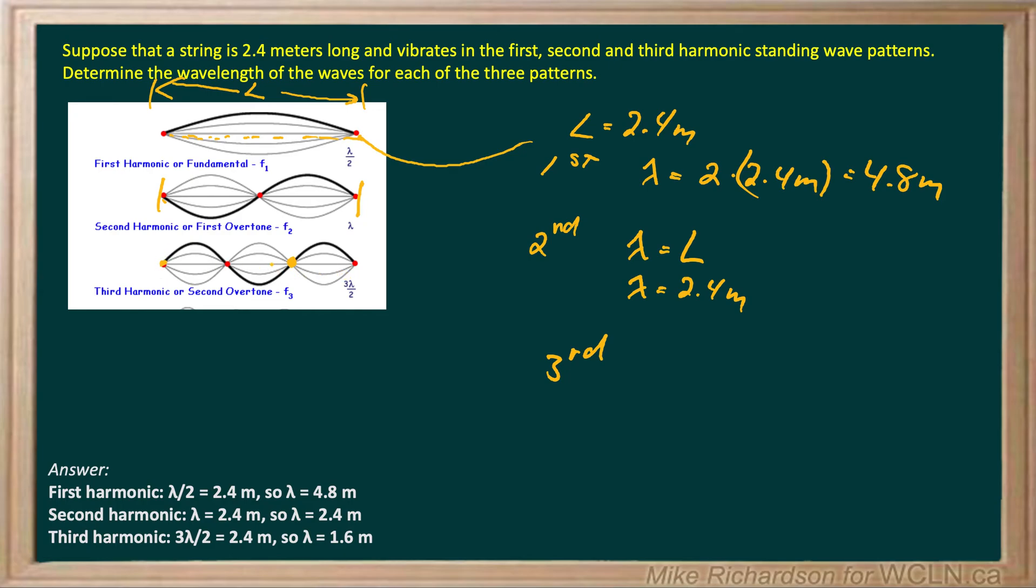So two thirds of the length is equal to one wavelength. So you can write that as an equation if you like. Two thirds of the length of that string is equal to one wavelength. So my wavelength will be two thirds of 2.4, which is 1.6 meters.